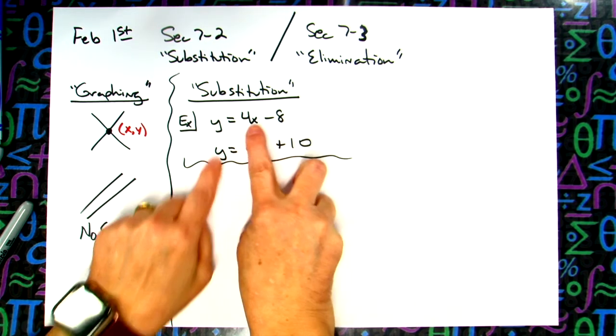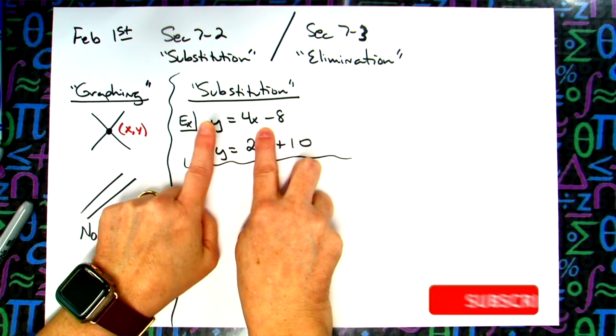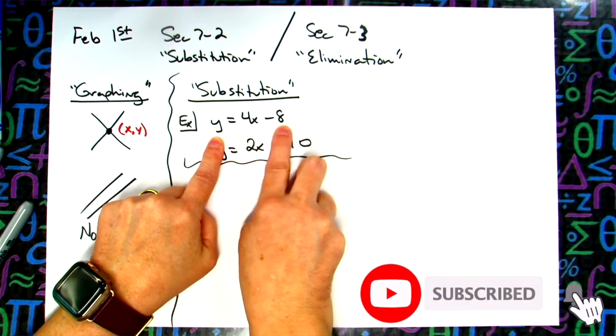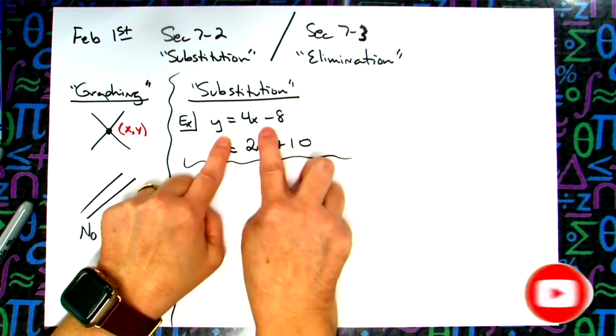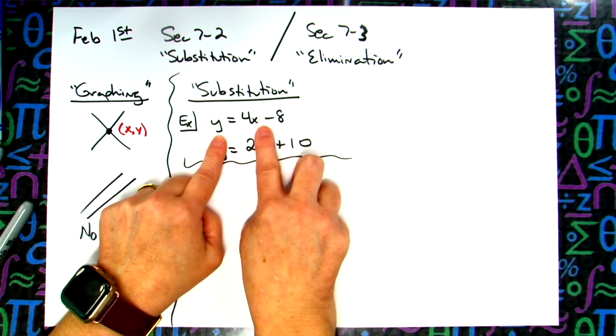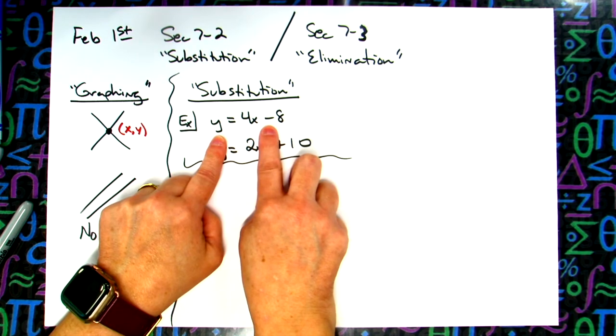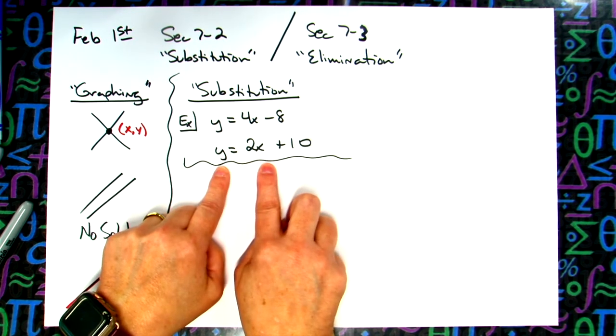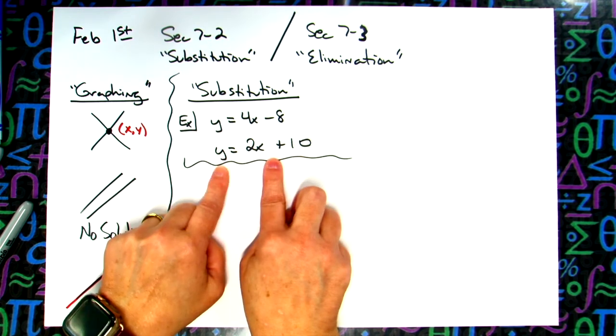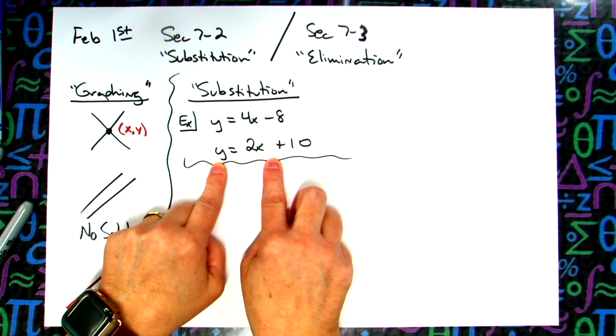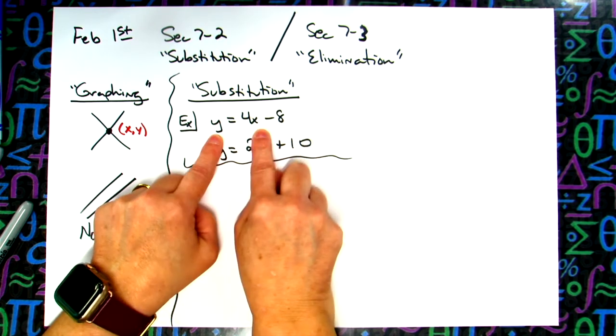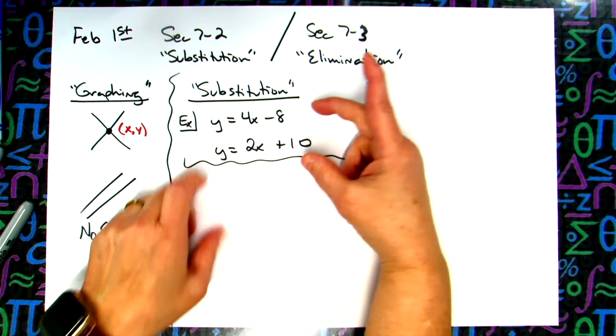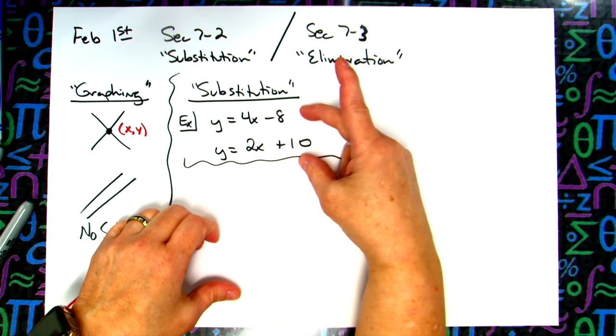Now this one the way this one is set up you got to think a little bit. This first equation is telling you that y and 4x minus 8 is the exact same thing. They're equal to each other so they mean the same thing. So I could substitute the 4x minus 8 for a y anytime I see a y. The second line is telling you the exact same thing, that 2x plus 10 is equal to a y. So if this quantity is equal to y and this quantity is equal to y, then I technically should be able to set these two things equal to each other.